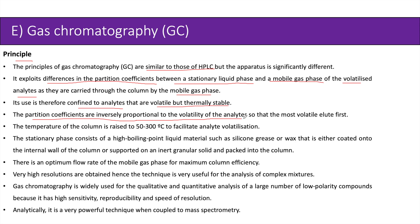The partition coefficients are inversely proportional to the volatility of the analytes, so that the most volatile elutes first. The temperature of the column is raised to 50 to 300 degrees Celsius to facilitate analyte volatilization. The stationary phase consists of a high boiling point liquid material such as silicon grease or wax, coated onto the internal wall of the column or supported on an inert granular solid and packed into the column. There is an optimum flow rate of the mobile gas phase for maximum column efficiency.